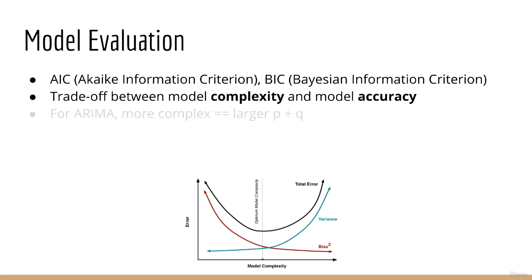When we are building machine learning models, we often have to make a tradeoff. This tradeoff happens between model complexity and model accuracy. For ARIMA, model complexity means increasing the values of P and Q. Recall that P is the number of past data points to include in the model and Q is the number of past errors to include in the model.